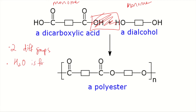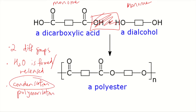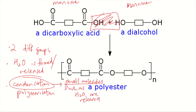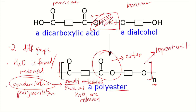It is called condensation because during polymerization, small molecules such as H₂O are released. Small molecules can be other things, not just water. The result is a polyester because it has many ester linkages. The bracket notation shows the repeat unit — the whole bracketed section repeats many times.